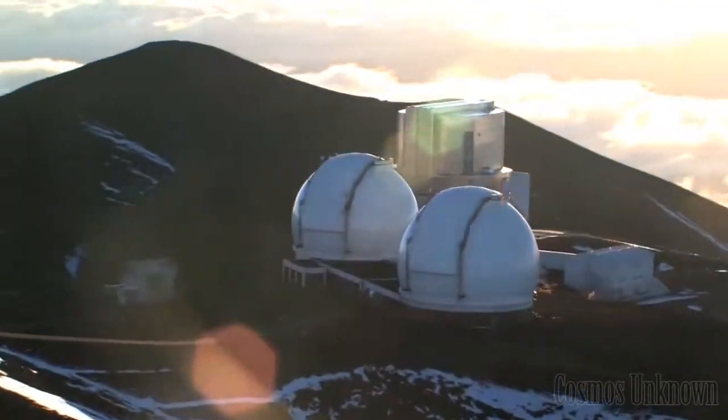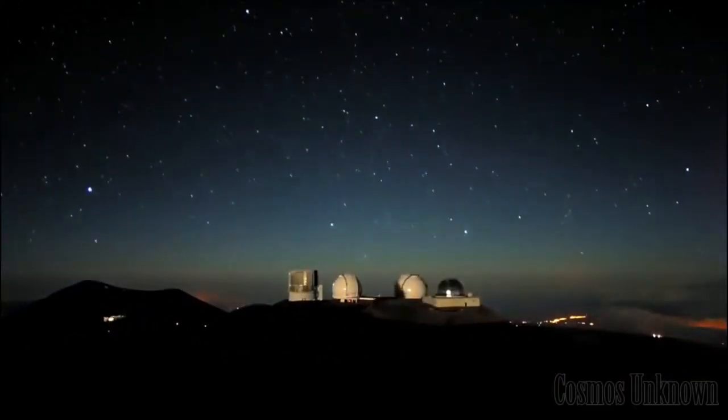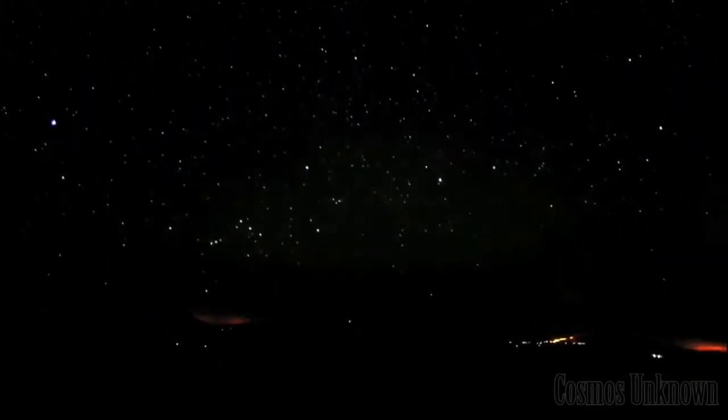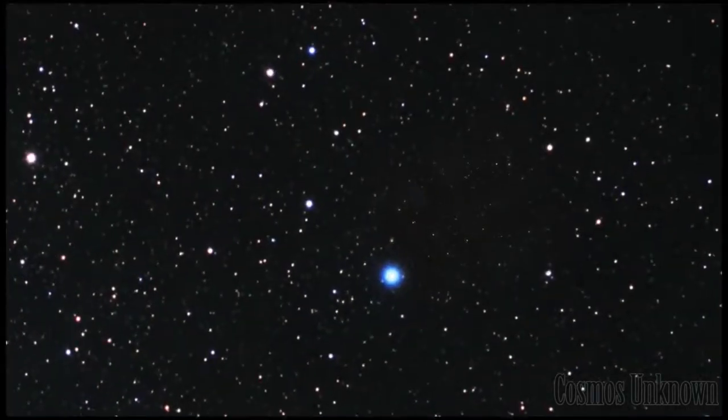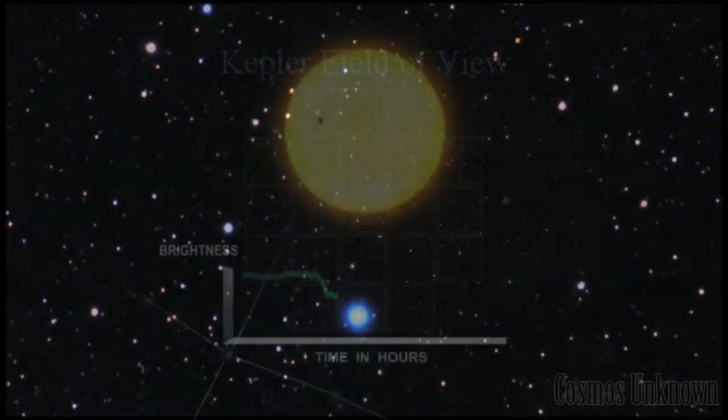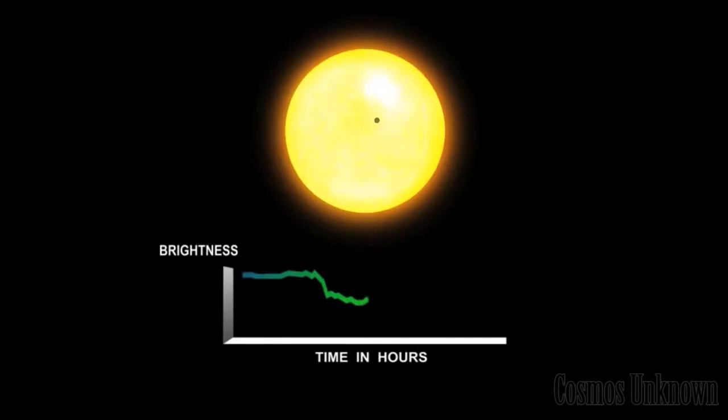The new study, conducted by researchers at the Complutense University of Madrid and the University of Cambridge, analyzed the positions and velocities of 339 hyperbolic objects in the solar system.